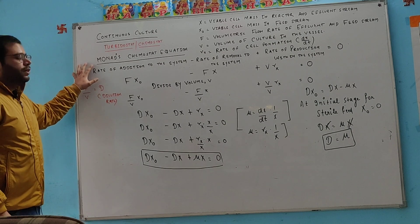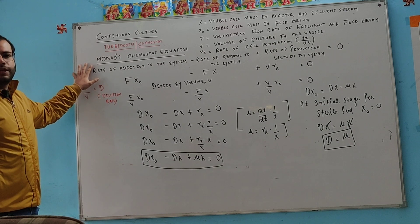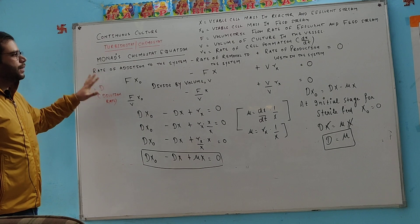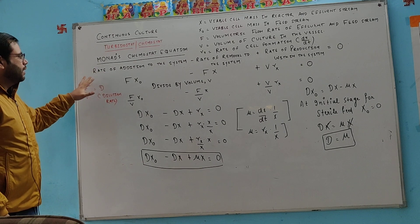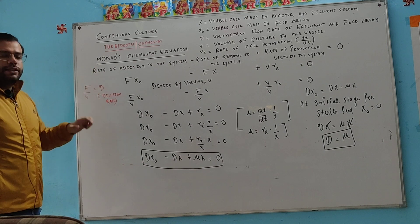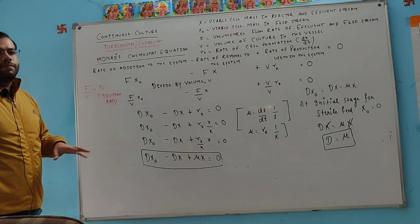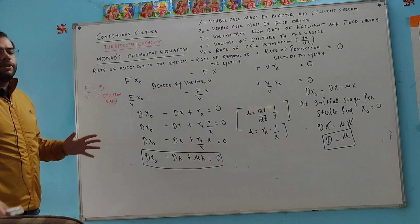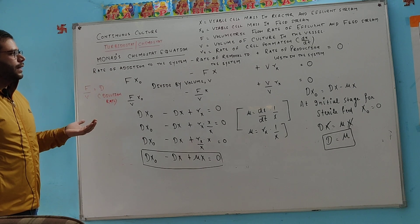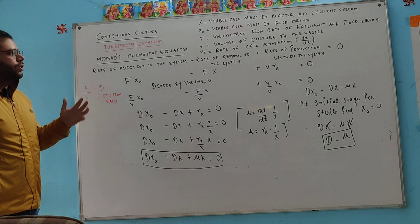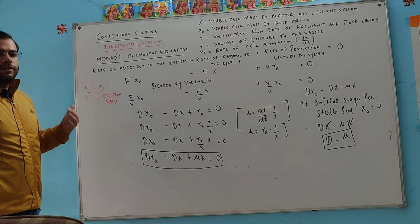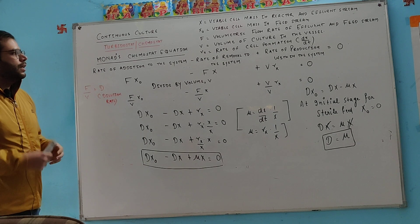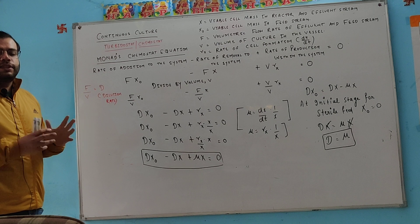We have the Monod chemostat equation. The rate of change equals the rate of addition to the system, minus the rate of removal from the system, plus the rate of production within the system.